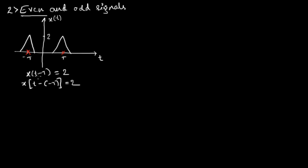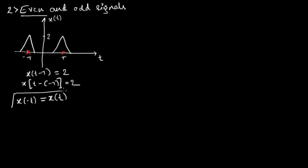Signals of this type are called even signals. A signal x of t is said to be an even signal when x of minus t is equal to x of t. Such signals are called even signals.